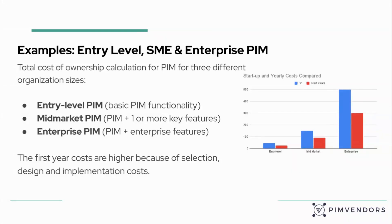We'll look at some examples: entry-level PIMs, small to medium enterprise PIMs, and true enterprise PIMs. We have an example calculation of the total cost of ownership for these three sizes. Entry-level PIMs have basic PIM functionality. Mid-market PIMs for small to medium enterprise have one or two more key features. Enterprise PIMs have enterprise features such as single sign-on, data quality, integration into different enterprise toolings such as ERP or Salesforce, et cetera. Year one costs are always higher because they include implementation and design costs.